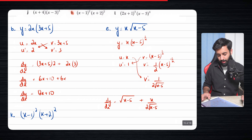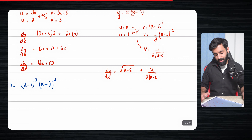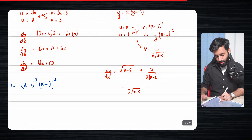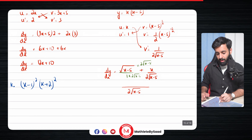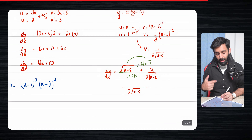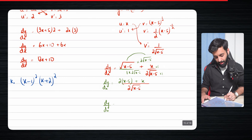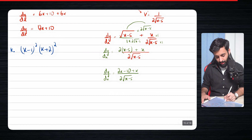Now let's simplify. The LCM is 2√(x−5). The denominator of √(x−5) is 1, so we multiply it by 2√(x−5). When √(x−5) is multiplied by √(x−5) you get (x−5), giving 2(x−5) in the numerator. Then the x term gets multiplied by 1, so dy/dx equals 2(x−5) plus x, all over 2√(x−5).